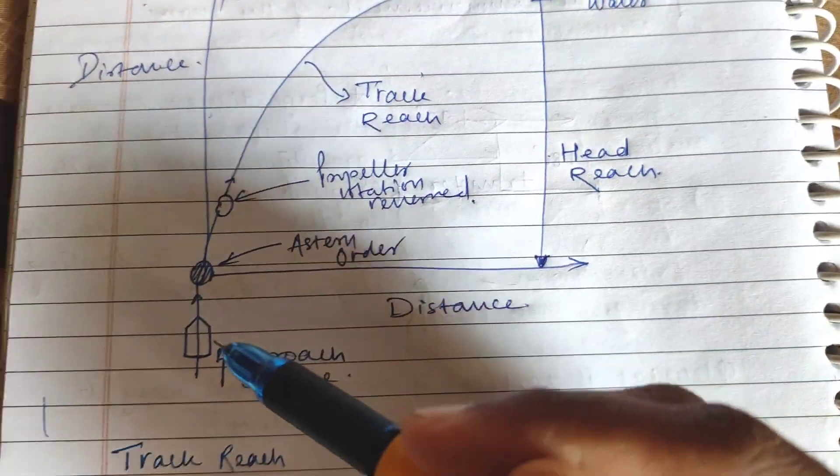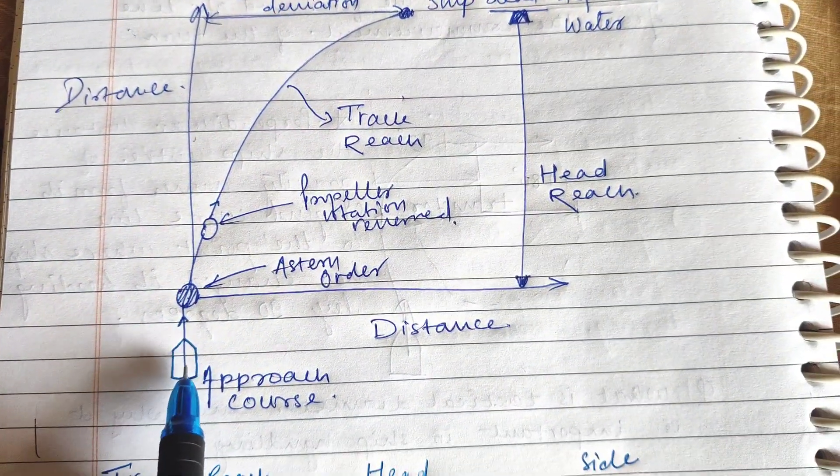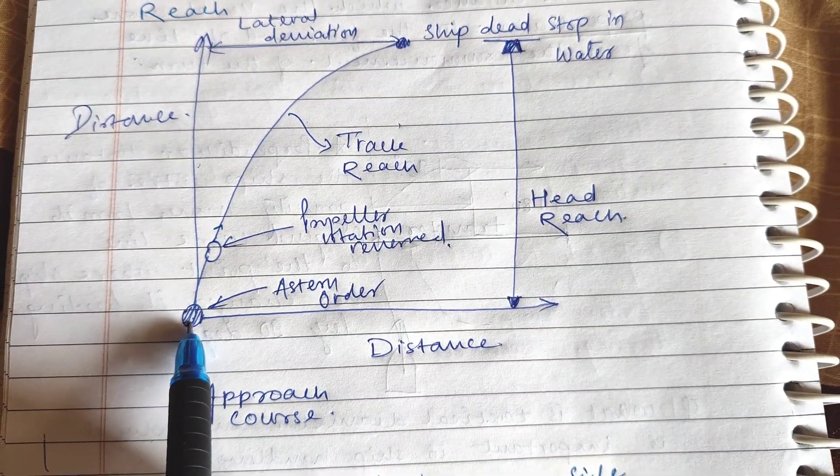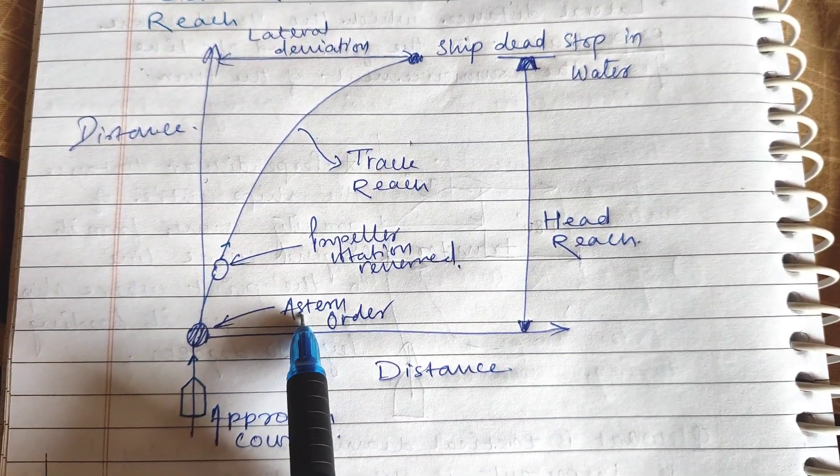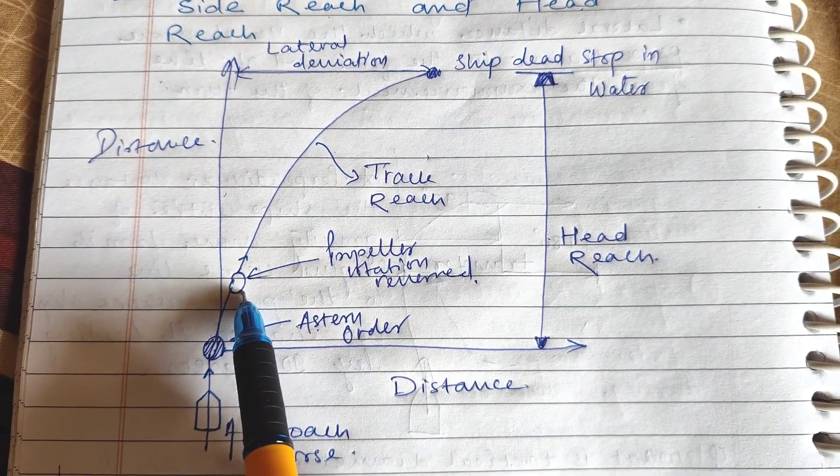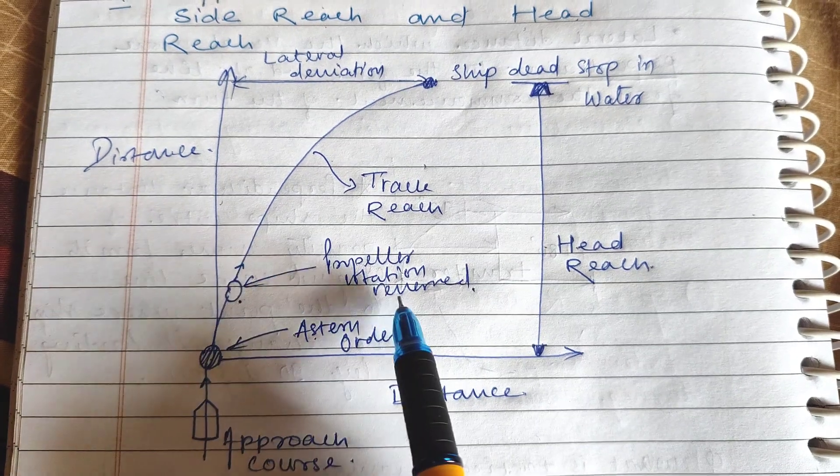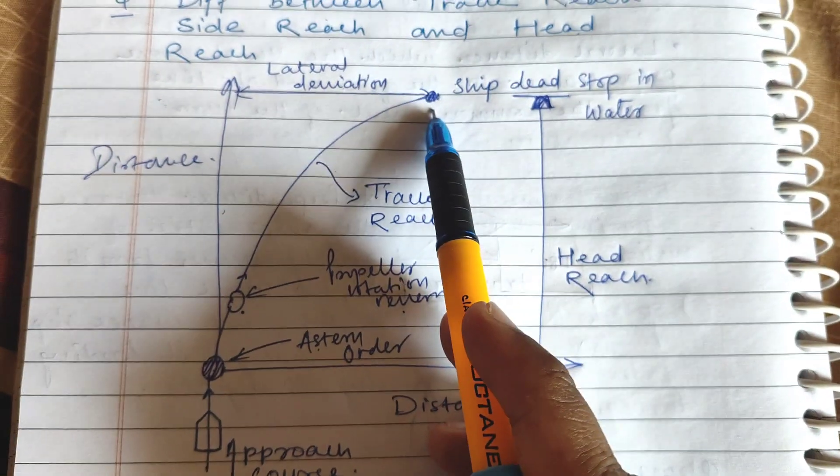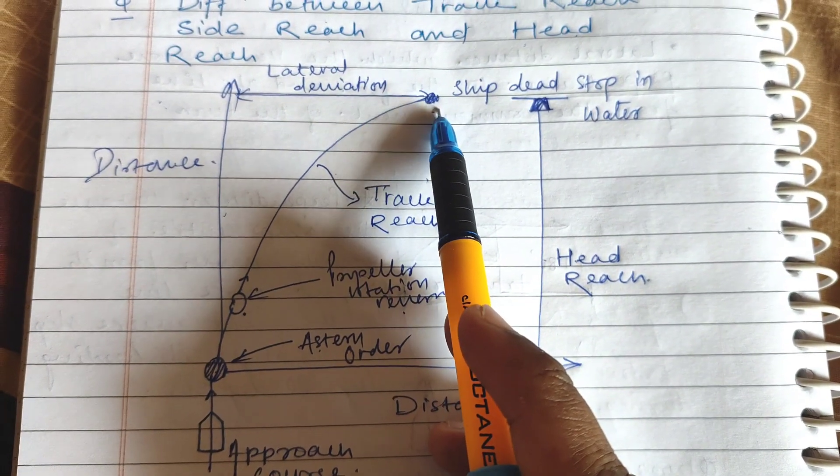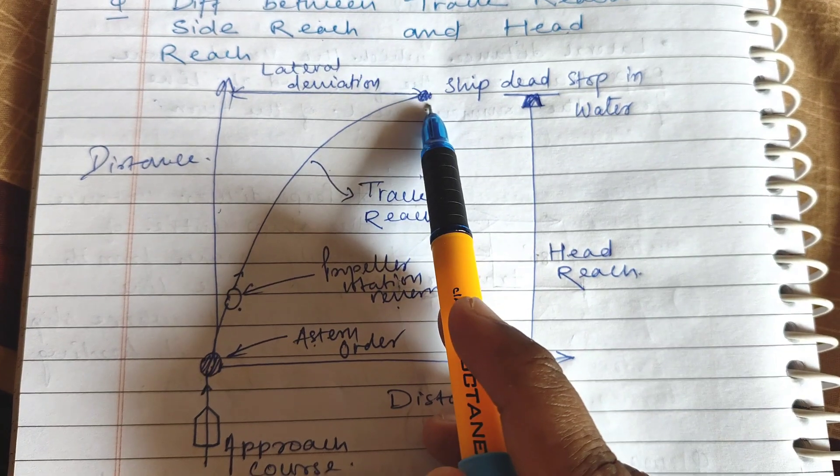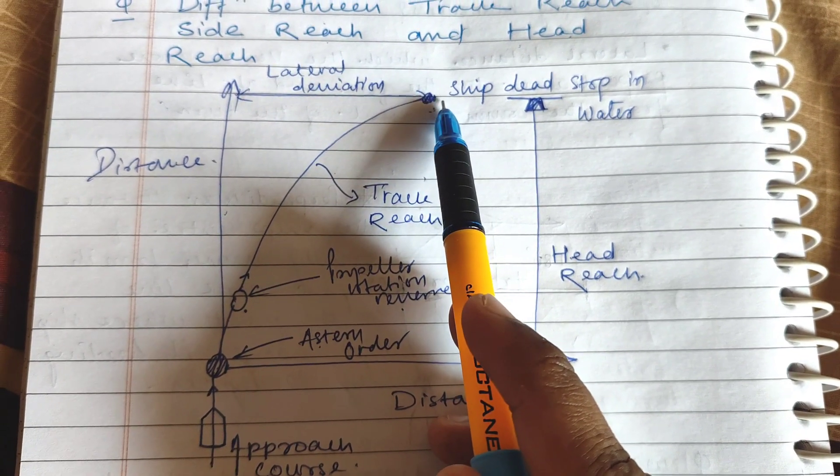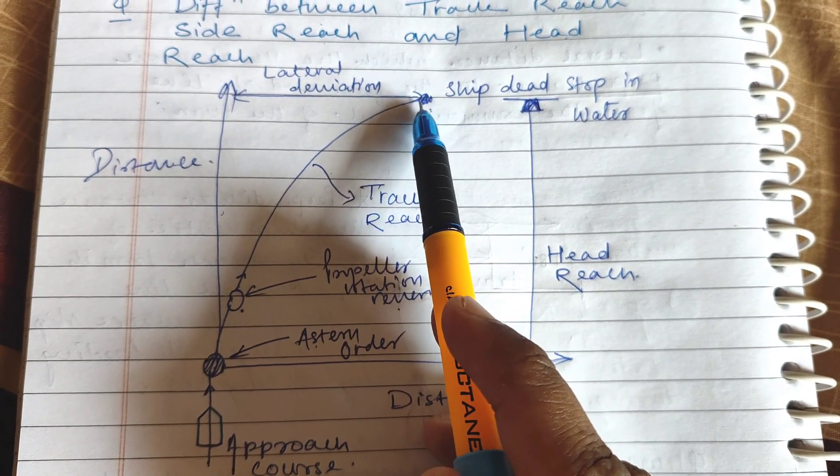This is the path of a ship. This is the point where a stern order is given, this is the point where propeller rotation is reversed, and this is the final point where the ship is dead stop in water. After this point the ship starts moving backwards.